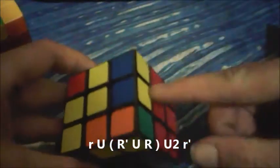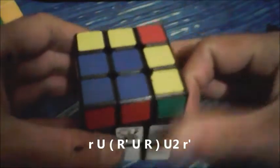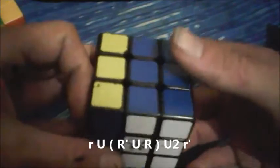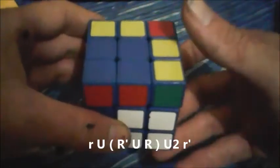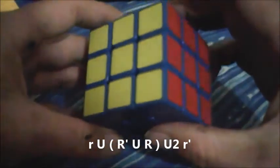So for the next couple of examples, it's just going to be a U2. So on the right hand side: R prime U, R prime, U, R, U2, R prime. So once more: R prime U, R prime, U, R, U2, R prime.